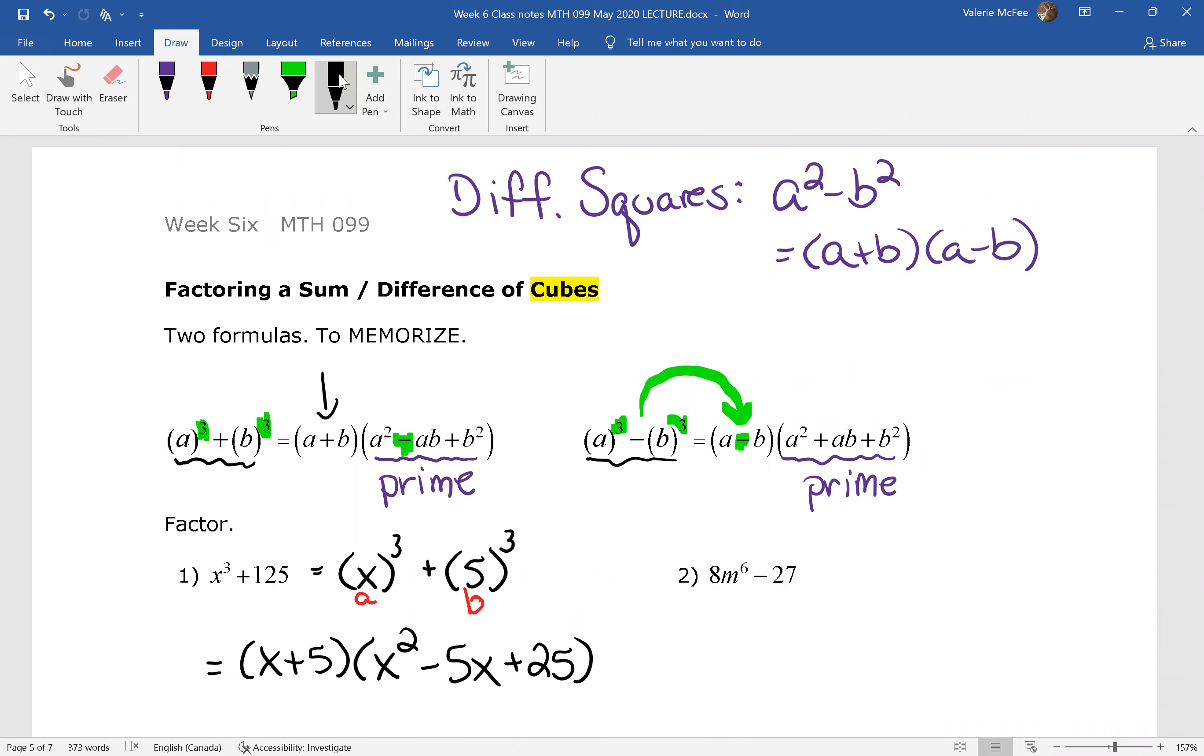Let's try this difference of cubes together. So this time we're subtracting. So what's being cubed in the first place? 2³ gives me 8. What about m? Remember, when we're raising a power to a power, we multiply the exponents. So that's going to be an m². And 3³ will give me 27.